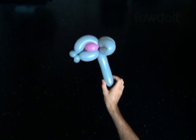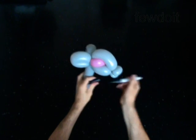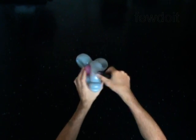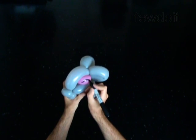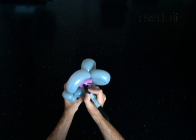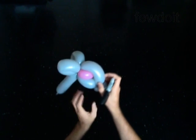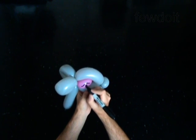Use a permanent marker to draw the face of the baby deer. You have made the head of the baby deer.